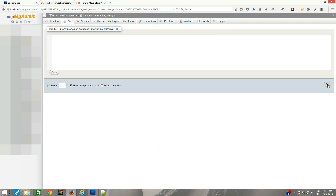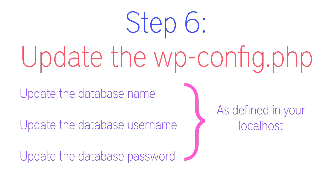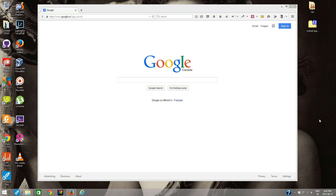After running all three queries, we are on the final step of the migration process, which involves editing the wp-config.php file. The only three configurations we need to modify are the database name, the database username, and the database password. The database username is usually set to root in most cases, and in most cases the database password is set to blank — but if you have another password, you can enter that. Just enter the configuration that is defined in your localhost.